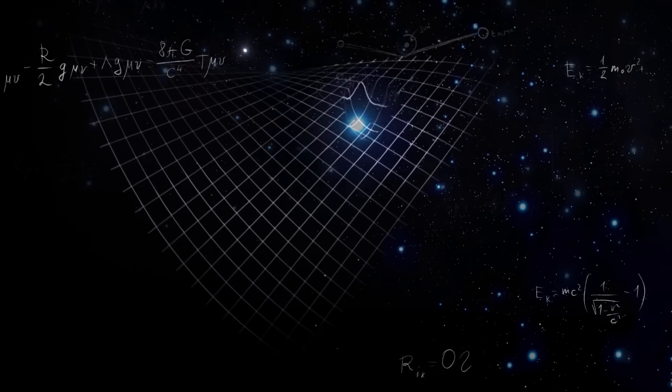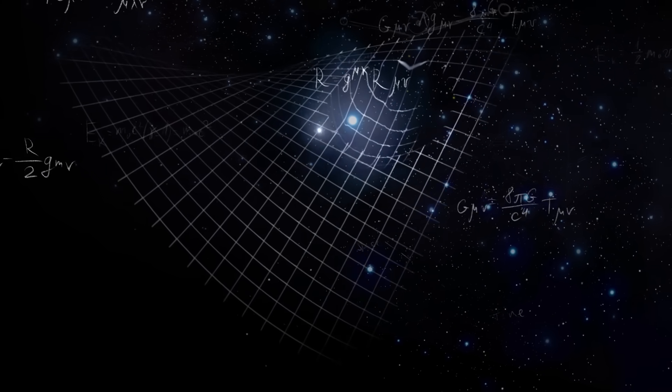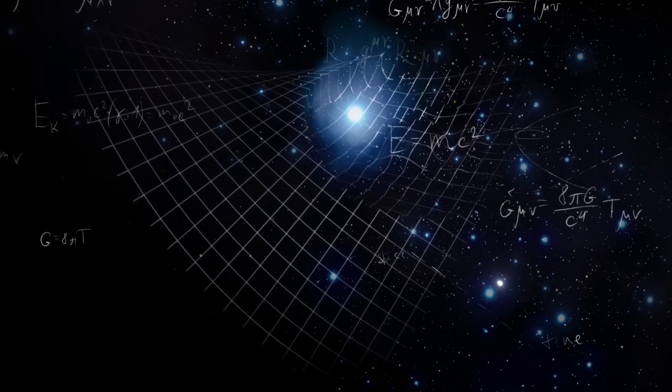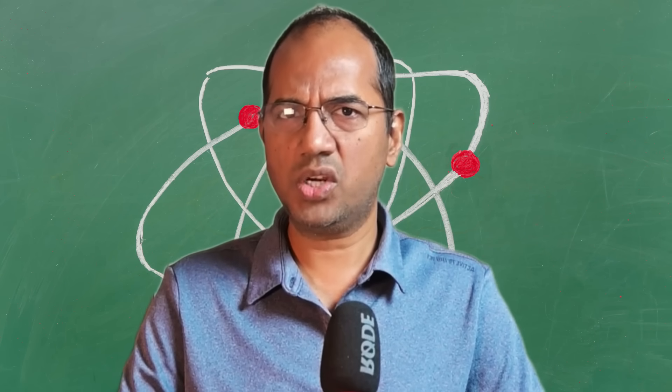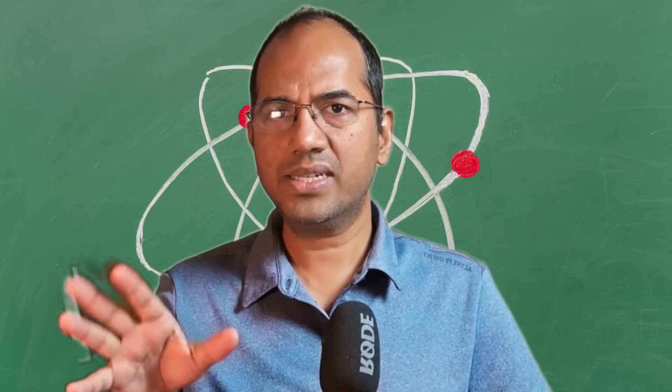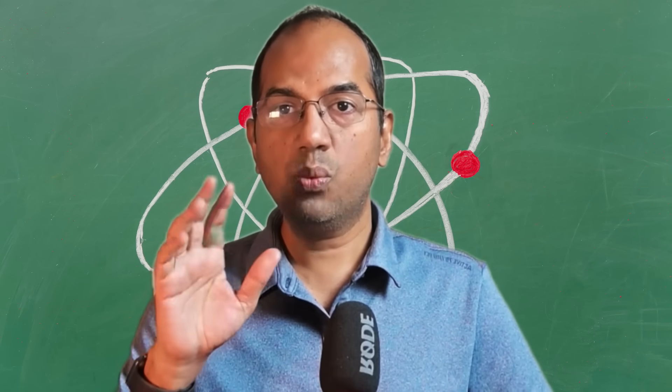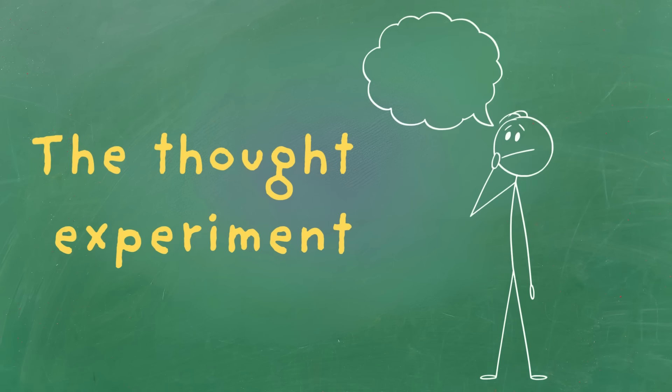What we experience as space and time are woven together into a single thing, spacetime. And this fabric of spacetime gets distorted by motion. To wrap our heads around just how weird this is, we need one of physics' most powerful tools, the thought experiment.